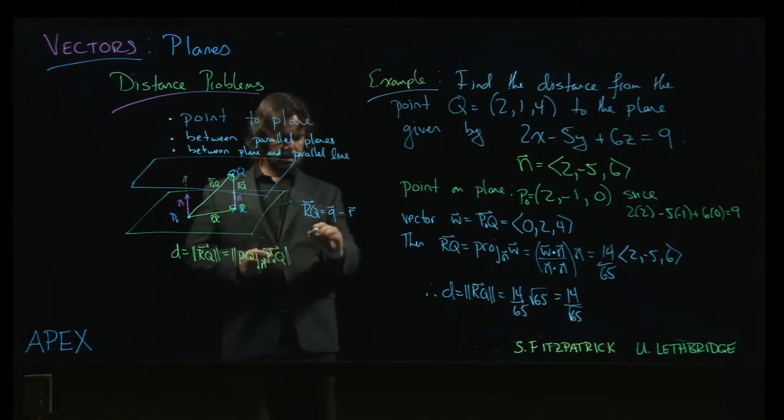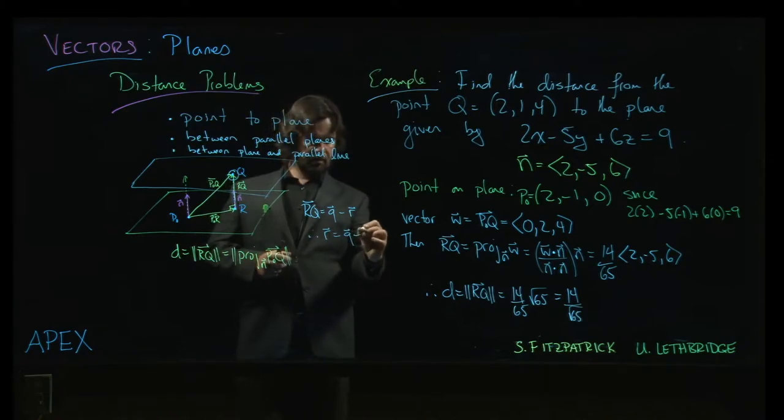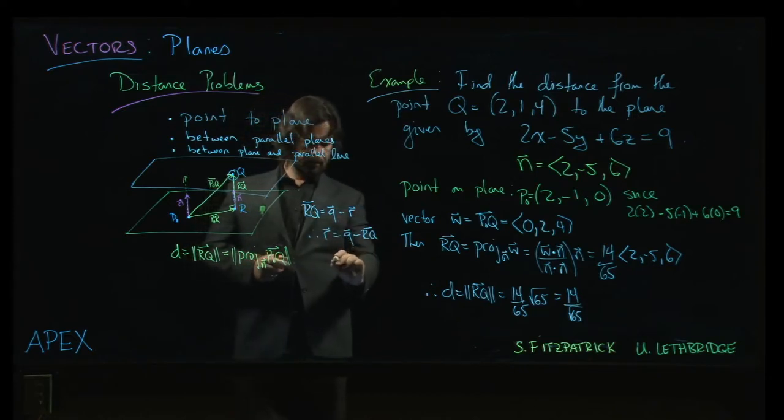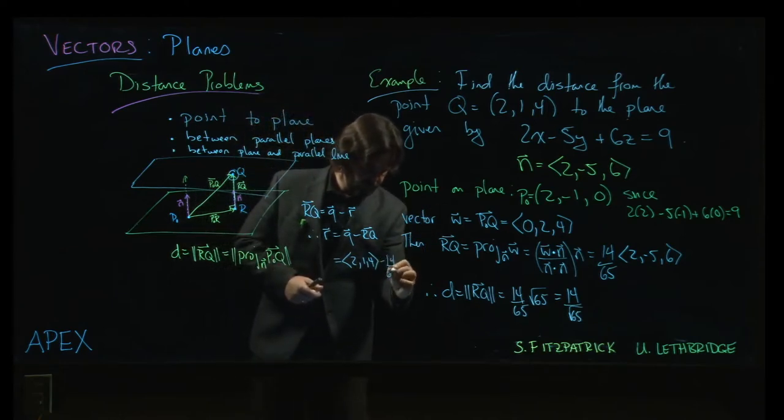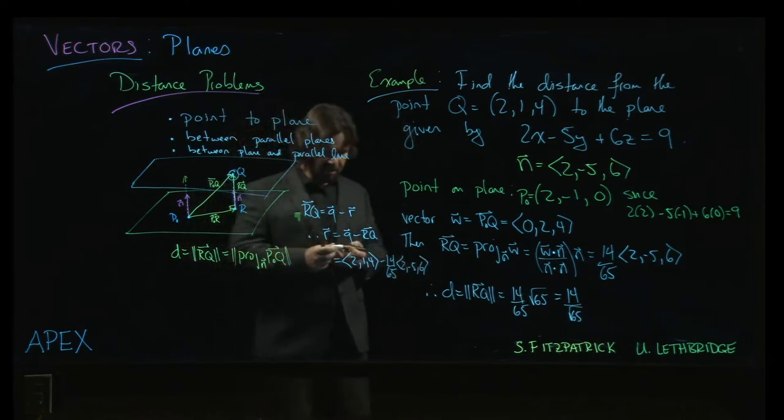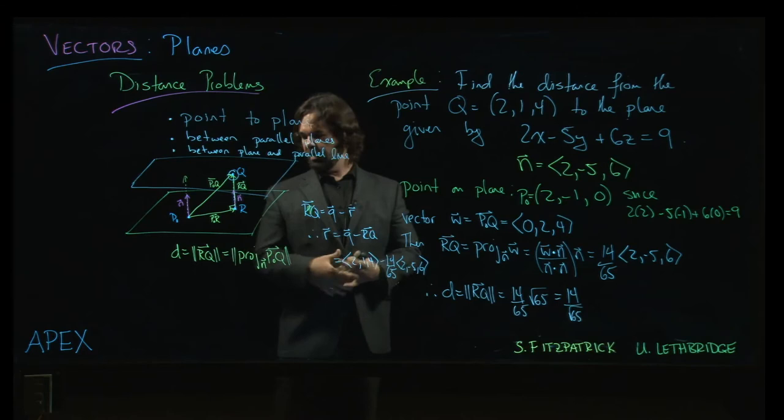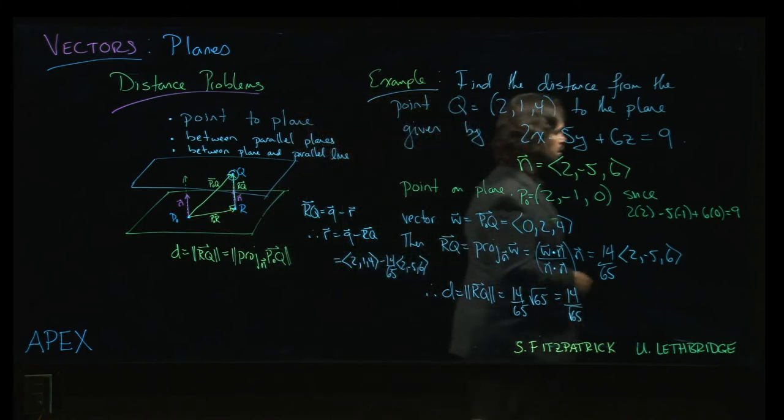So then if I wanted r, I could do q minus rq - just move that over. So the point q is (2, 1, 4), and you'd have that if for some reason you needed it. Thank you.